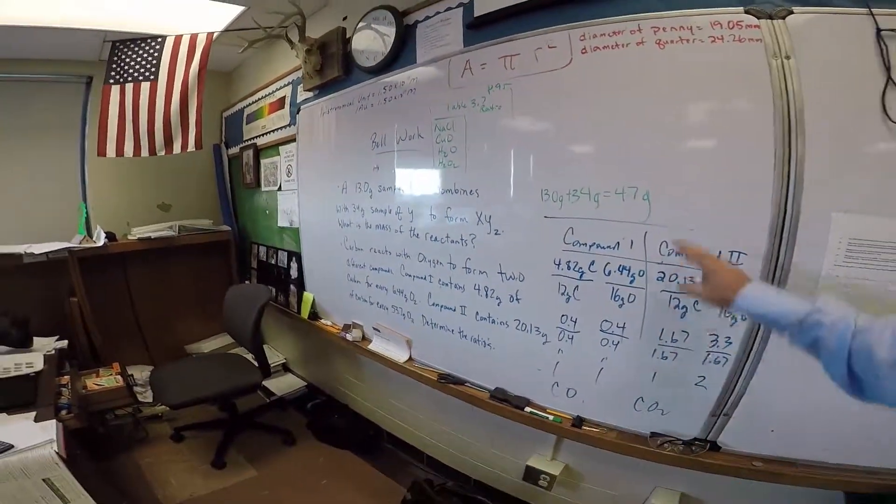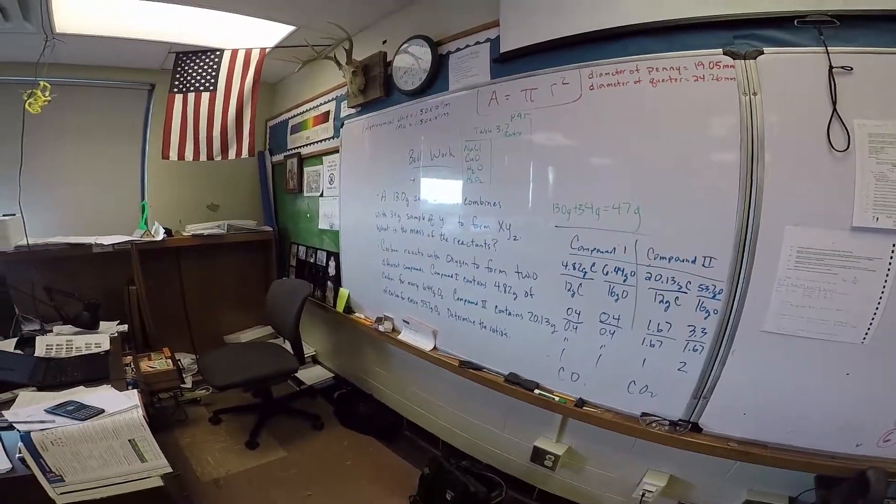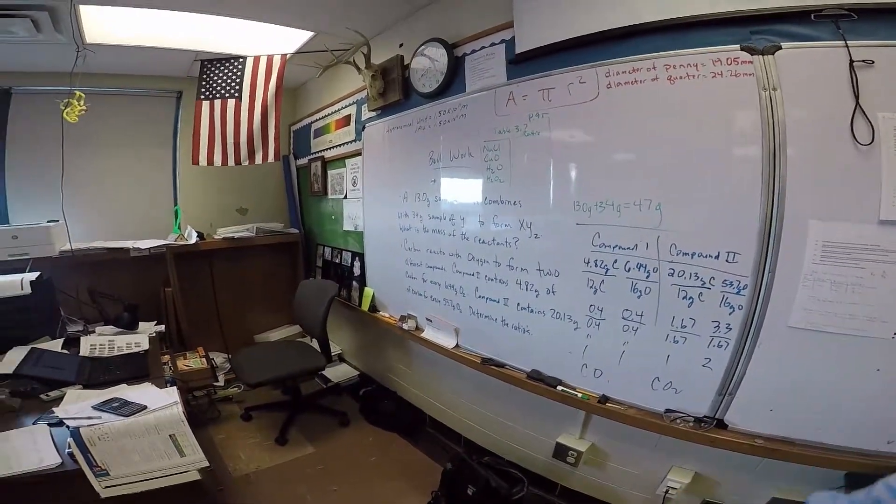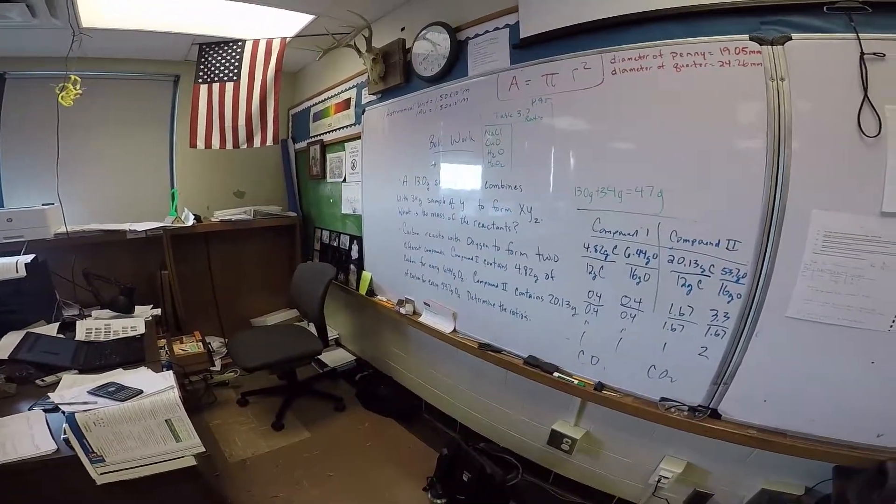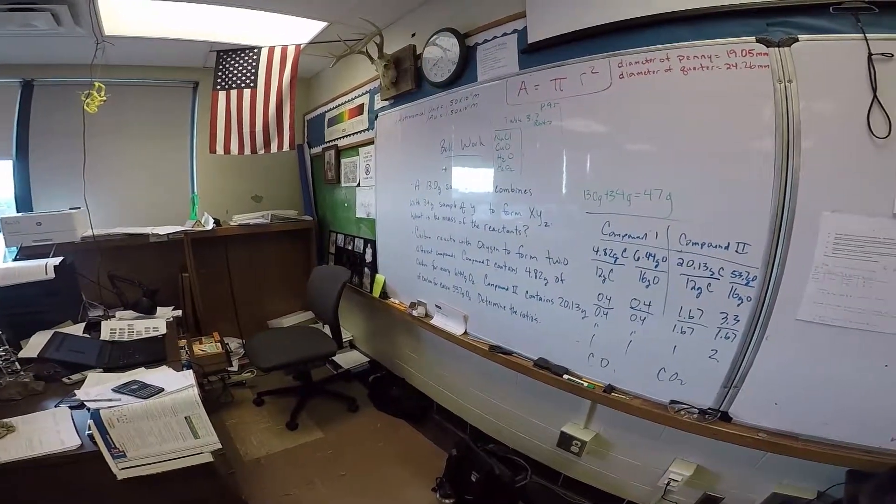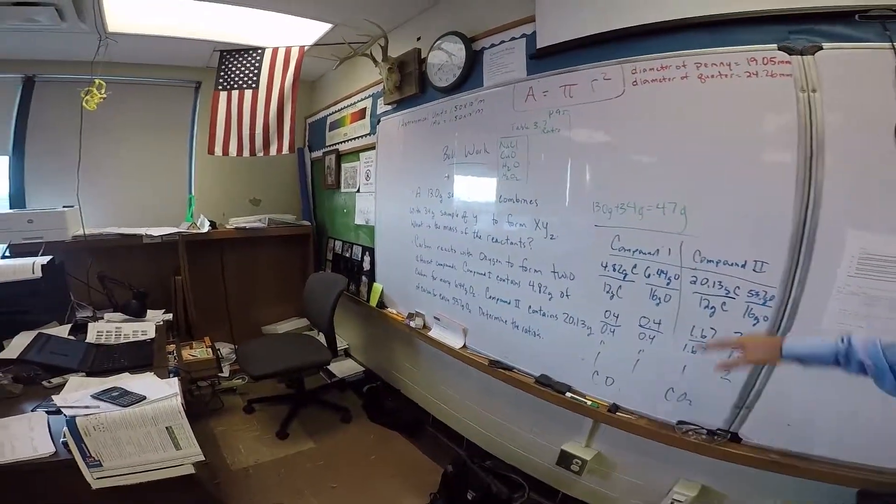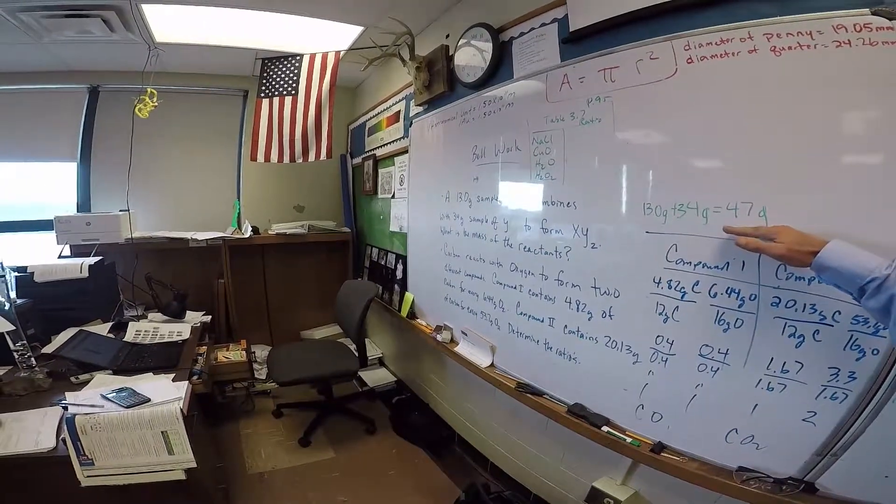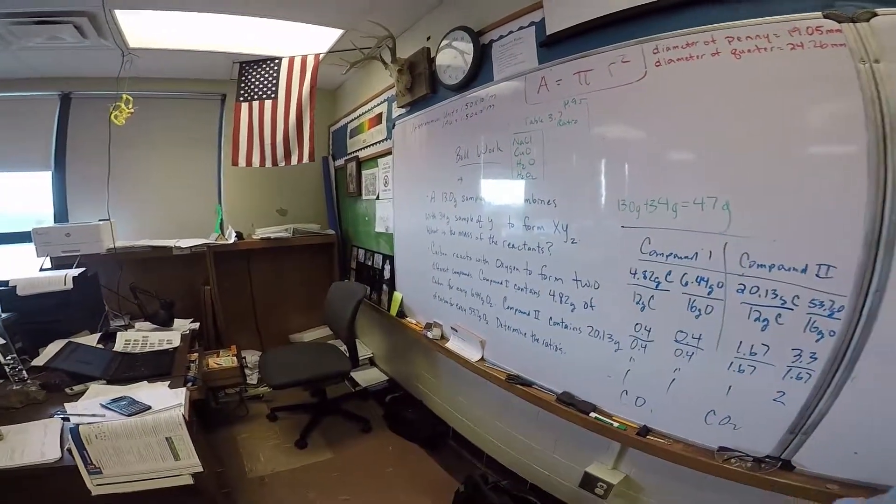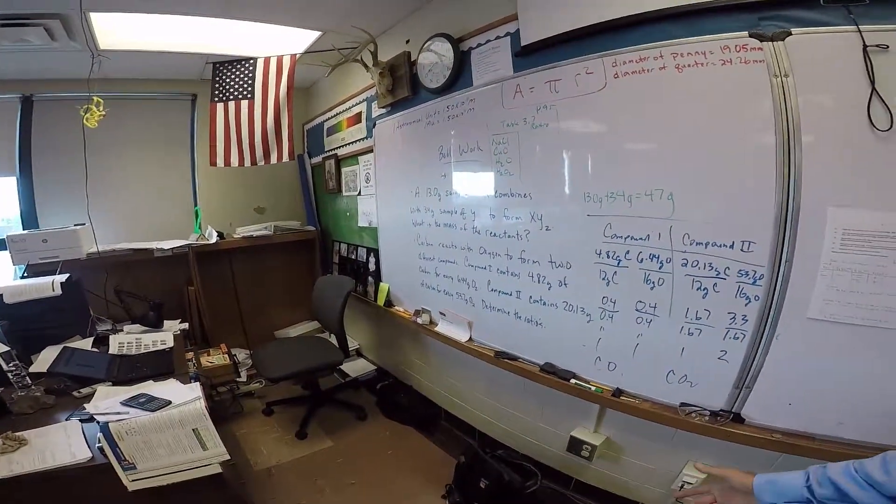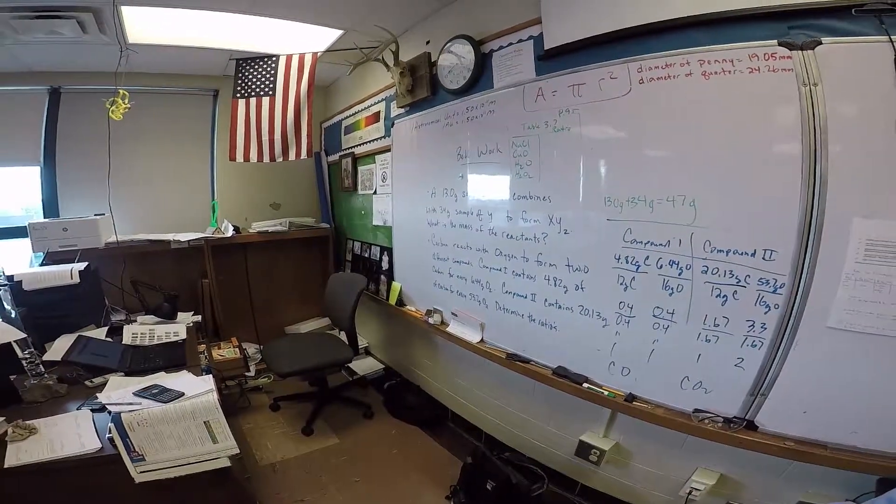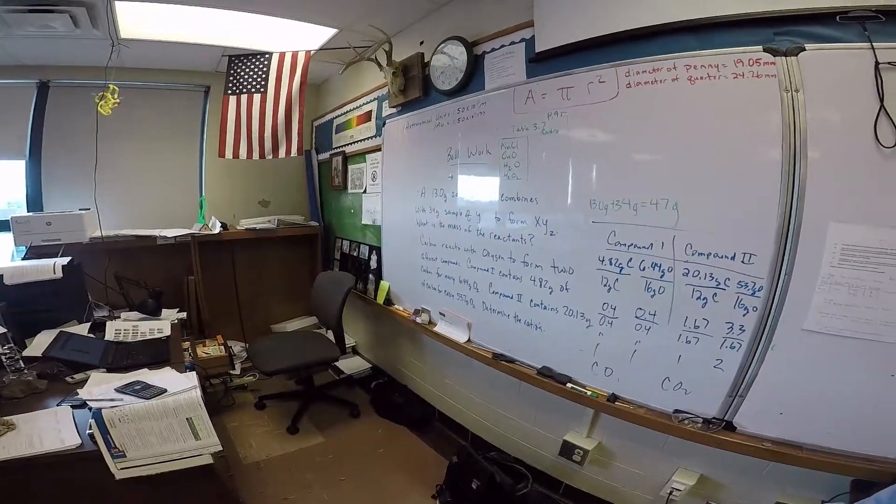So you're forming y too, but if you're given two samples, and you're given a 13 gram sample of x combines with 34 grams of y, your mass of the reactants are going to be what you have on hand. You're not going to form, you're going to have a little bit, a lot of that comes in with limiting reactants. We'll talk more about that later.